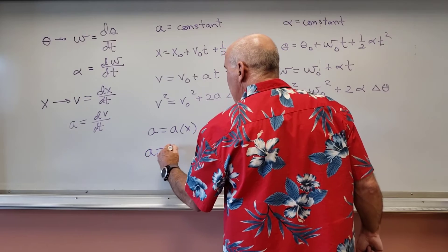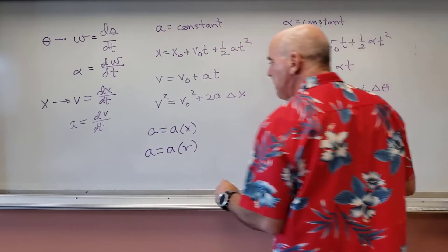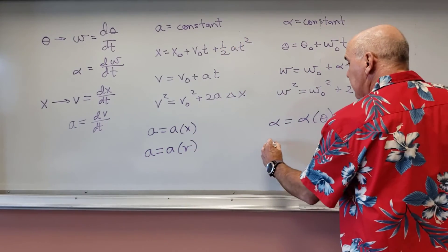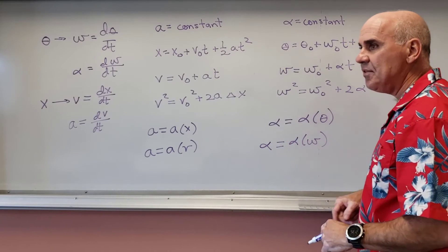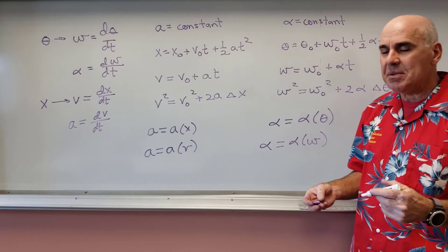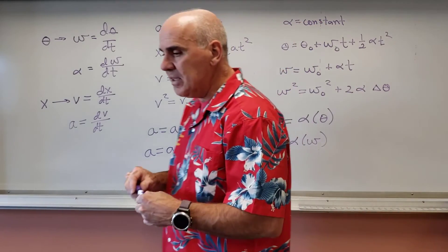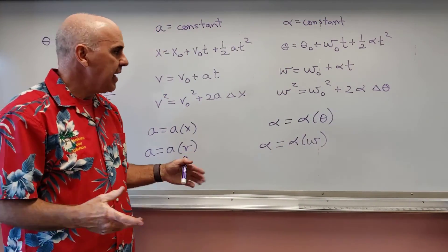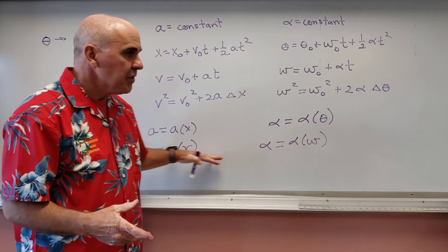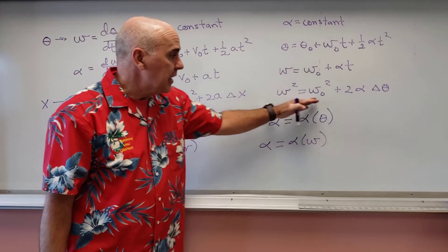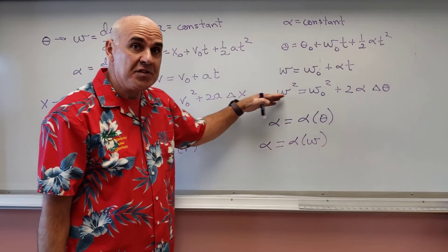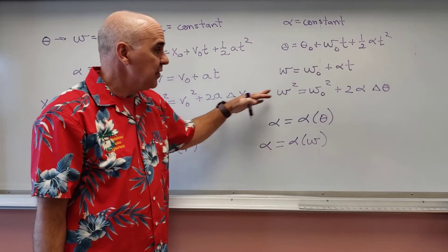Remember, we had acceleration was a function of velocity, and we got some relationships. We have the same thing here. Alpha is a function of angular velocity, and we're going to get some relationships, very much like we did in the first chapter, or the first few videos in Dynamics, where we had those accelerations as functions of position or velocity. Now we're going to have angular accelerations as functions of angular positions and angular velocities.